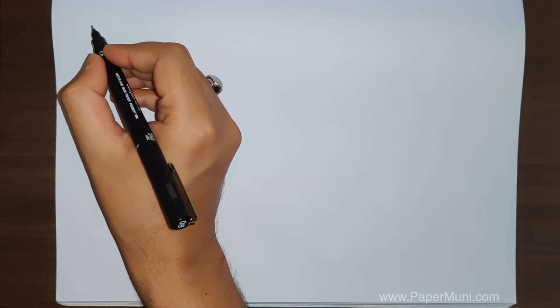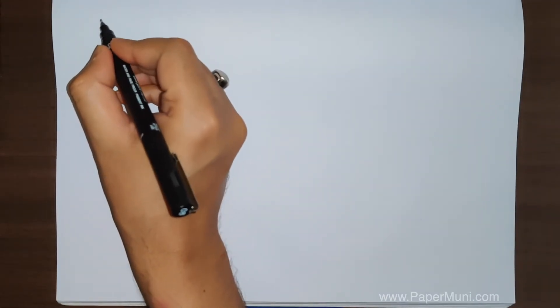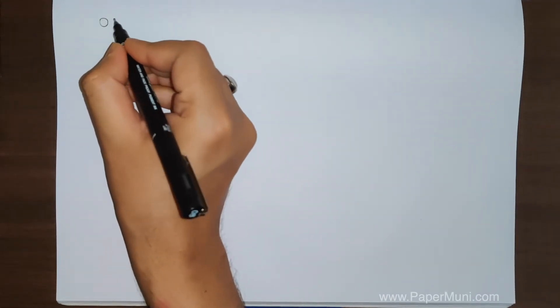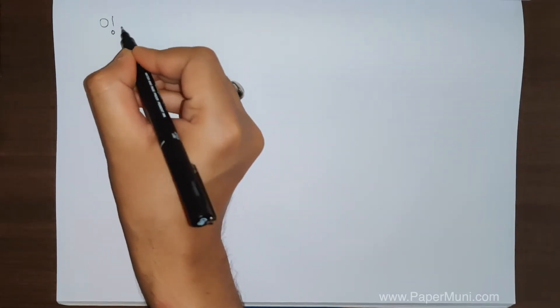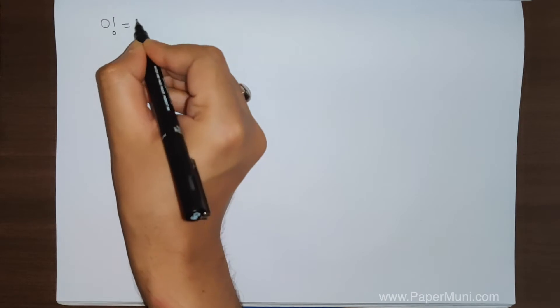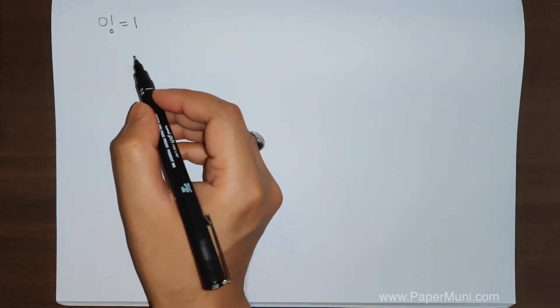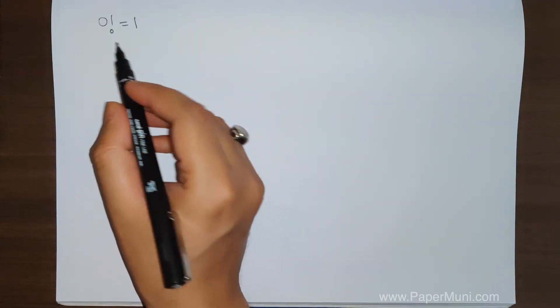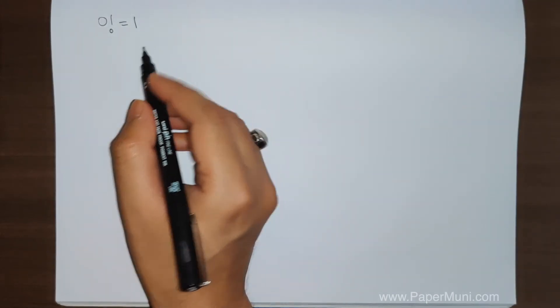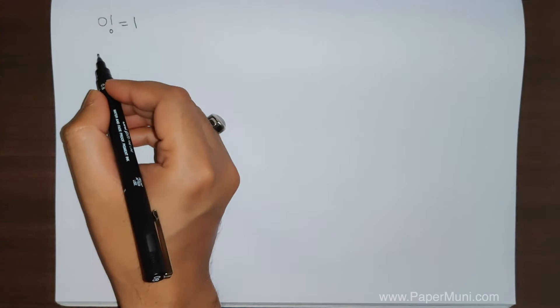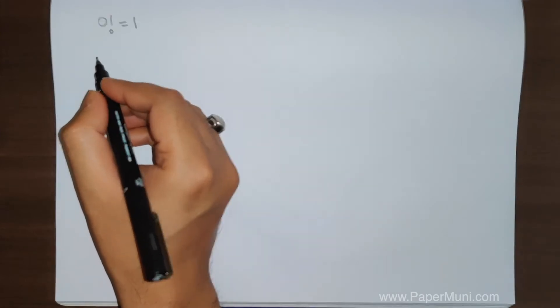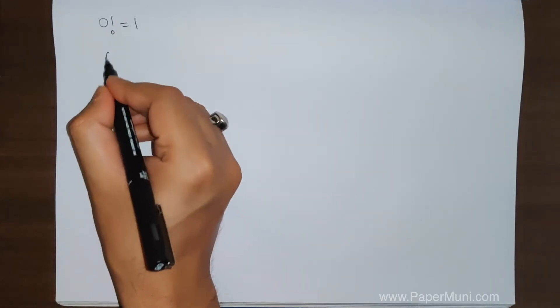Hey there, how are you? We have learned in our 11th and 12th class that 0 factorial is equal to 1. How do we prove that 0 factorial is 1? We will start with an integral.